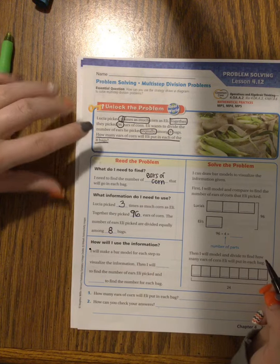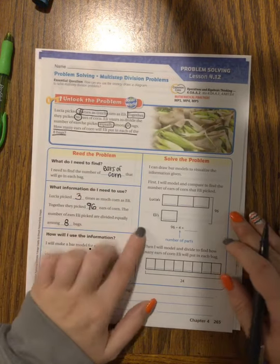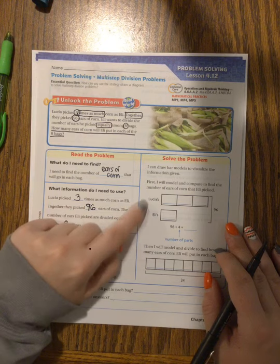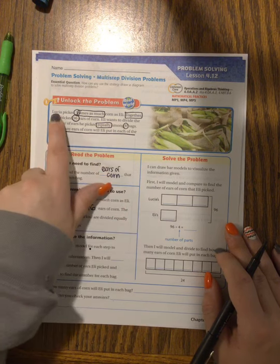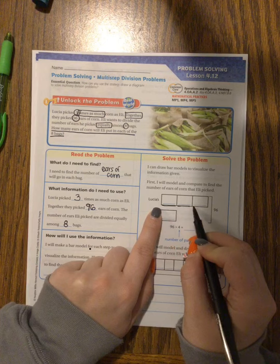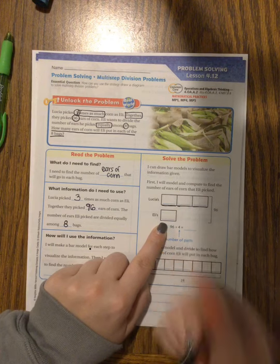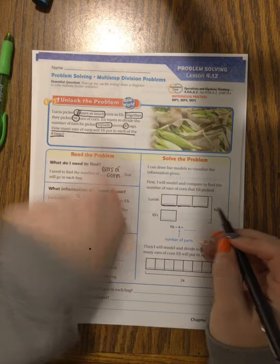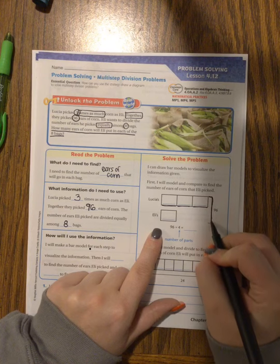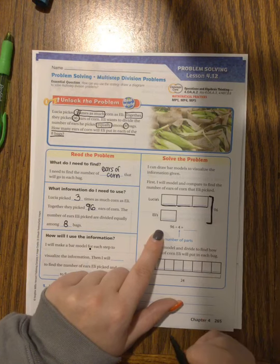Okay, so we're going to draw the bar model that helps me figure this out. On this one the bar model is already drawn for us so I'm going to explain it to you. So I know that at first I'm comparing Lucia and Eli's numbers of ears of corn that they picked. I know that because Lucia picked three times as many. So you notice that Lucia has three boxes because she picked three times as many and Eli just has one because whatever Eli did, Lucia did three times as much as that. I also know that together they picked 96 ears of corn. So this little arm bar thingy I call it a little hug. It's hugging both Lucia and Eli because all of theirs together equals 96.